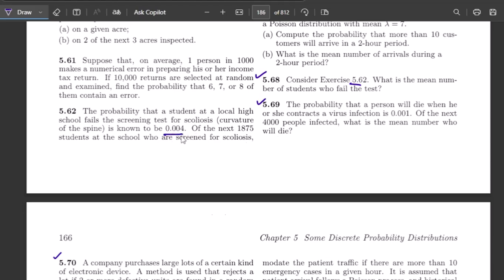So this is the probability for the next 1875 students at the school who are screened for scoliosis. So the next statement of it is of no relevance for us with respect to question 5.68. So here the probability is given, that is 0.04. The sample size here is 1875, which is n, and in order to find the mean number of students who fail the test we have to use the formula which is μ equal to np for the Poisson distribution.